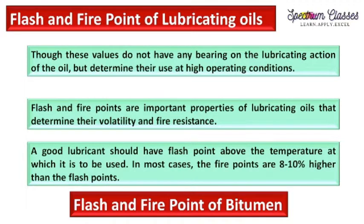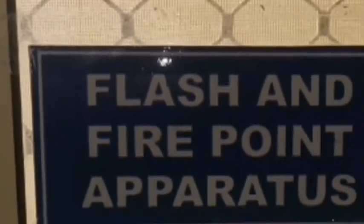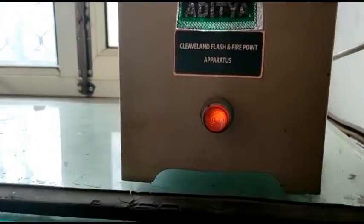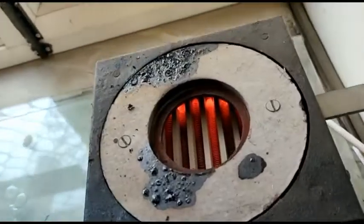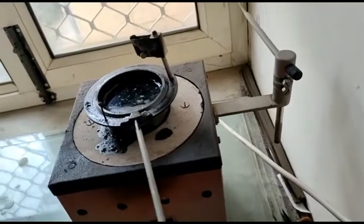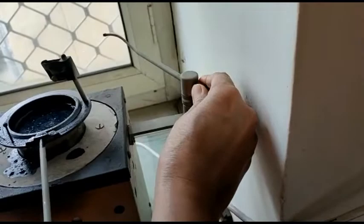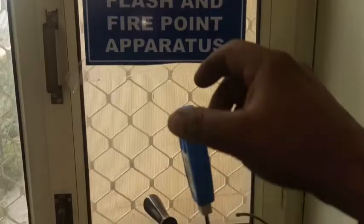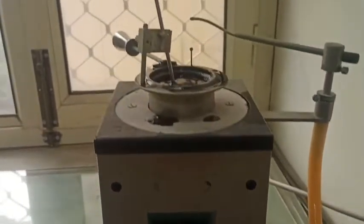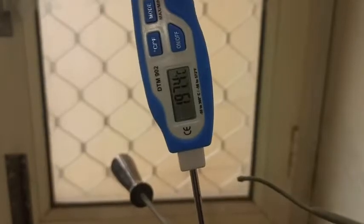Bitumen is not a lubricant, but it is easy to use to determine flash and fire point using this apparatus. The name of our apparatus is the Cleveland flash and fire point apparatus. Here is the heating arrangement for the cup in which bitumen is filled, and here is the arrangement for the pilot flame. We also have a thermometer with a maximum capacity of 300 degrees centigrade.